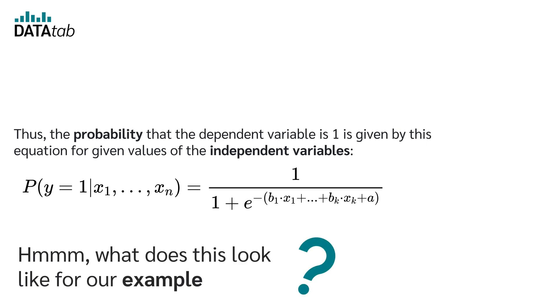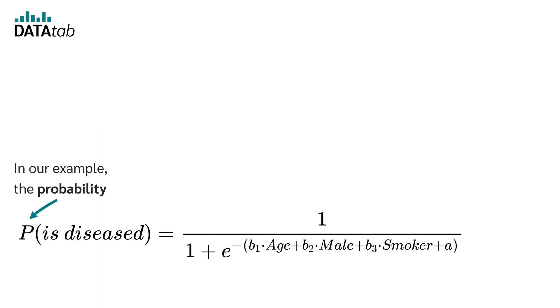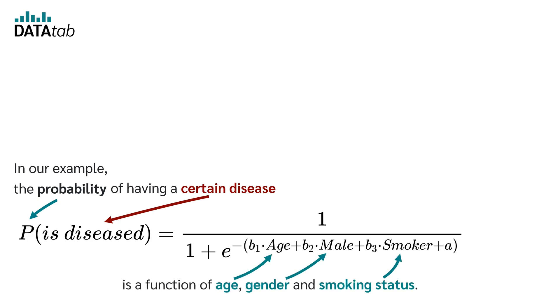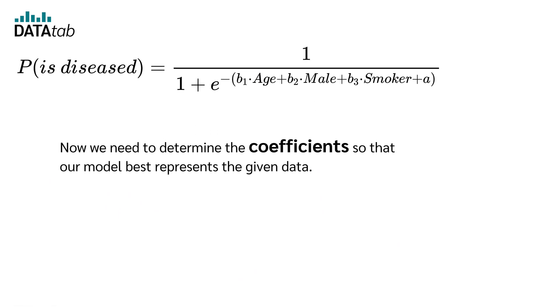What does this look like for our example? In our example, the probability of having a certain disease is a function of age, gender, and smoking status. Now we need to determine the coefficients so that our model best represents the given data.